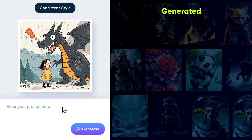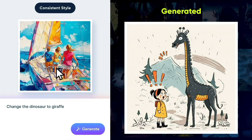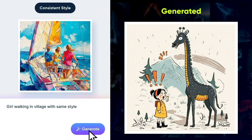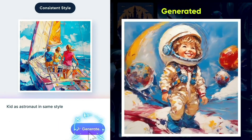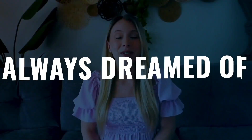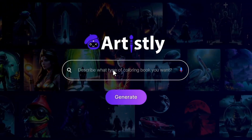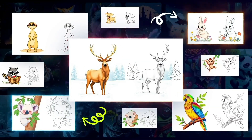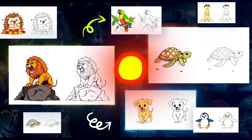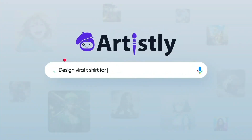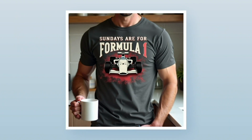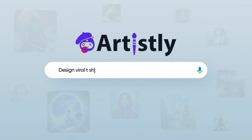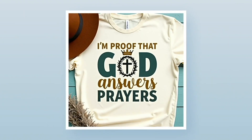Copy the style of any image you like and generate unique images with the same consistent style. Always dreamed of creating a children's book? With Artisly, you can turn your ideas into stunning storybooks or fun coloring books in no time. Have a cool t-shirt idea? Just type a keyword, and Artisly will instantly create hot-selling viral designs.